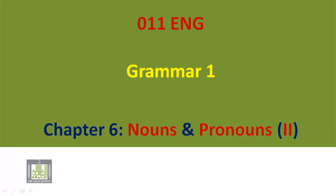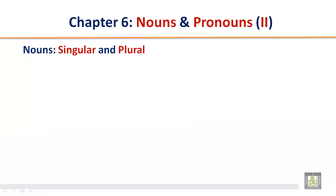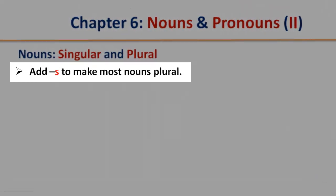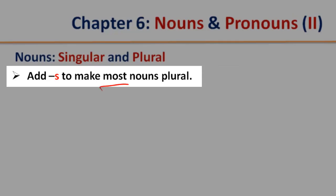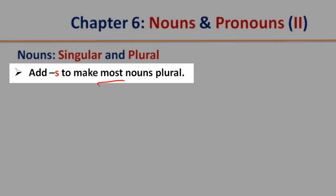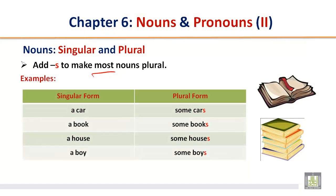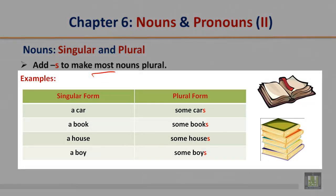Chapter 6: Nouns and Pronouns, Part 2. Nouns, singular and plural. Add S to make most nouns plural. Singular form: a car. Plural: some cars. A book, some books. A house, some houses. A boy, some boys.